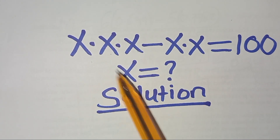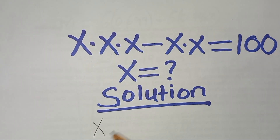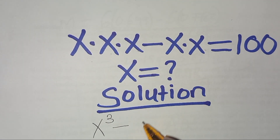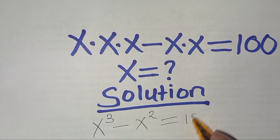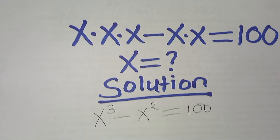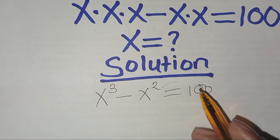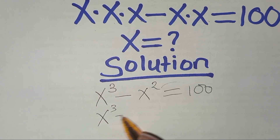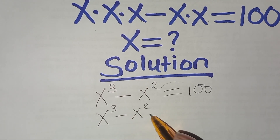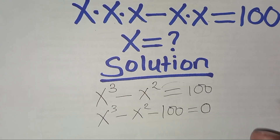Now for the solution, x times x times x is basically x to the power 3, subtract x times x, which is x to the power 2, this is equal to 100. Let's take 100 to the left hand side, so we'll have x to the power 3, subtract x to the power 2, subtract 100, this is equal to 0.